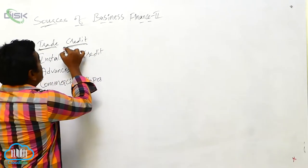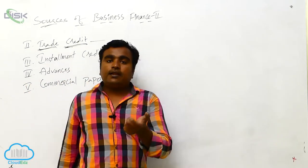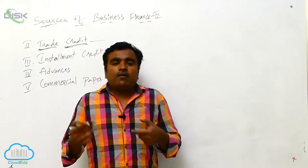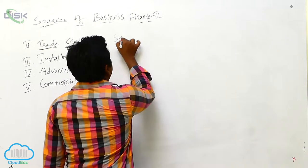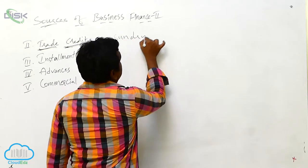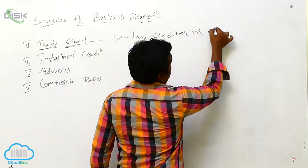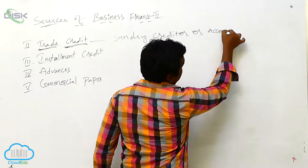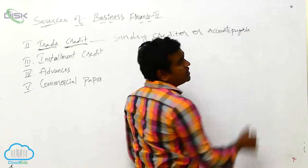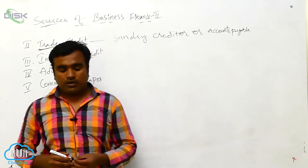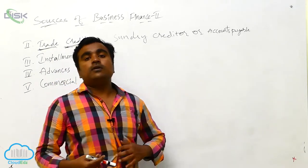The trader who gets the credit will write in their books of accounts as sundry creditors or accounts payable. It is a short-term fund which facilitates the short-term source of funds.